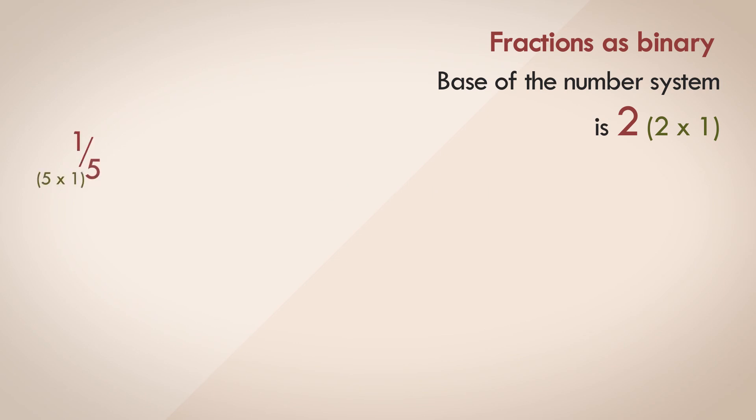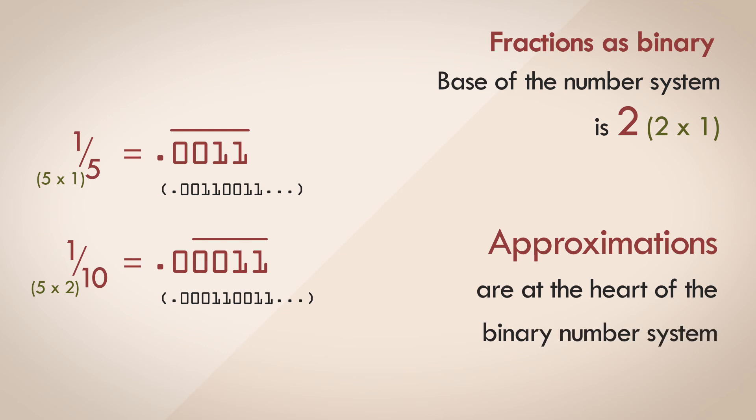Numbers like 1 fifth is 0.0011 recurring, or 1 tenth, which is 0.1 in decimal, is 0.0011 recurring. So you can see that approximations are at the heart of the binary number system, and in fact, all such numbers that you store on a computer, that you think should be perfectly representable in a fixed number of digits, may not be exactly represented when stored as binary inside the computer.